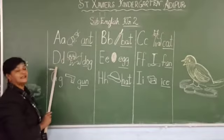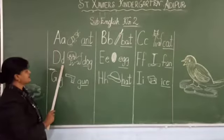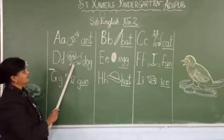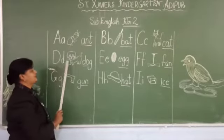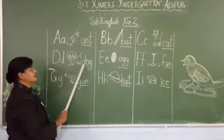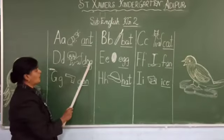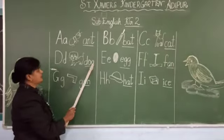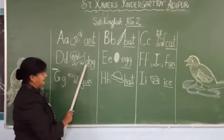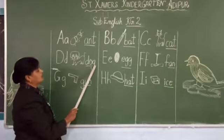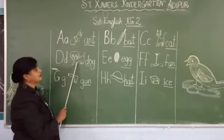Our next alphabet is D. Capital D, small d. D is for dog. Dog. The spelling of dog is D, O, G. Dog. Spell along with me? D, O, G. Dog. What is this? Dog.